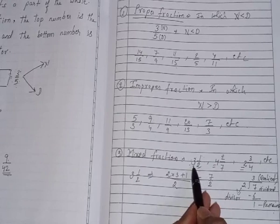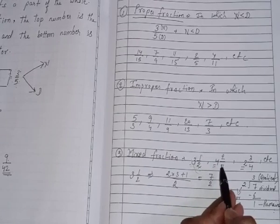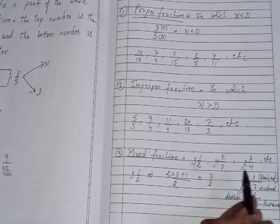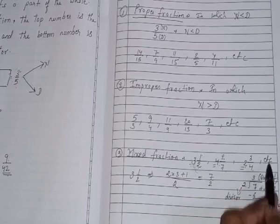How we will read it? We will read it 3 holes 1 by 2, 4 holes 2 by 3, 2 holes 3 by 4, etc.